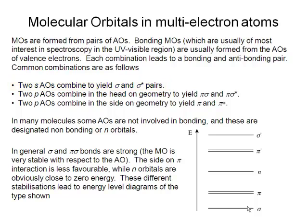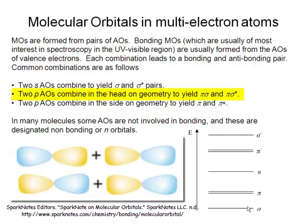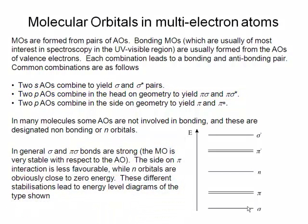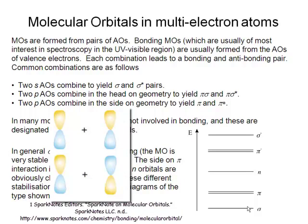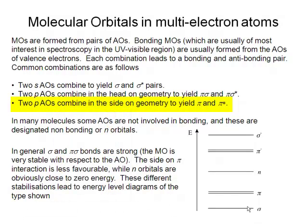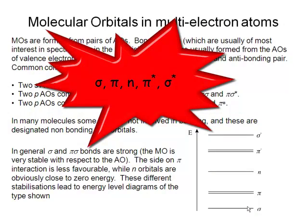If we take two P atomic orbitals and combine them in a head-on fashion, we refer to that overlap as producing sigma or sigma-starred molecular orbitals. If we bring two P orbitals together in a side-on fashion, the overlap yields pi and pi-star orbitals. In some molecules, atomic orbitals which are populated do not get involved in bonding at all, and we refer to those as non-bonding orbitals. In general, we end up with sigma, pi, n, pi-star, and sigma-star orbitals.